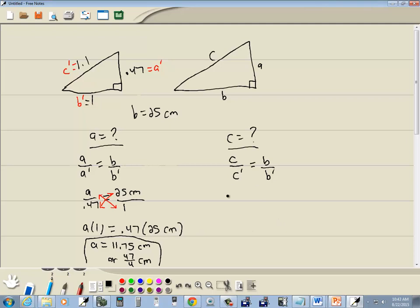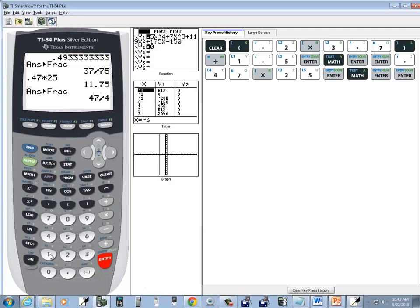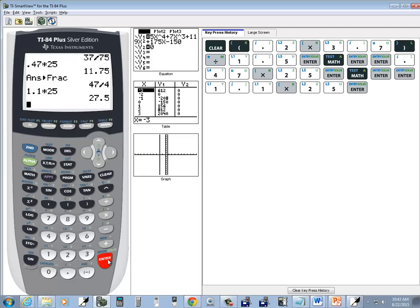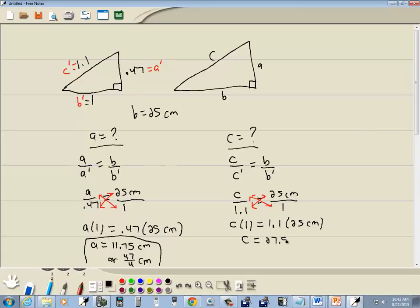Now we'll do the same thing over here. So C is what we're trying to find over C prime which was 1.1, equals B which is 25 centimeters over B prime which is 1. We got a single fraction equals single fraction, a proportion, so we'll cross multiply. So I'll take C times 1 and 1.1 times 25 centimeters. C times 1 is C, 1.1 times 25 gives us 27.5 centimeters.